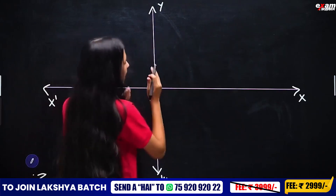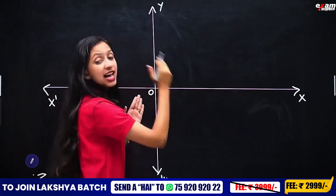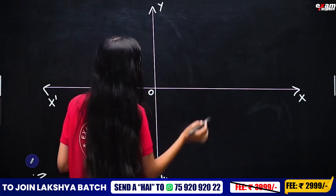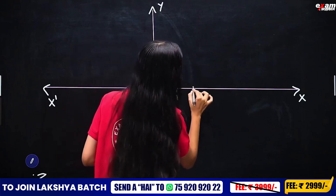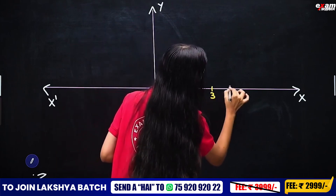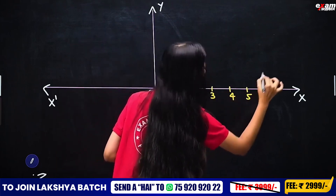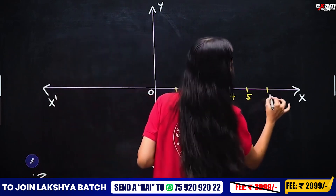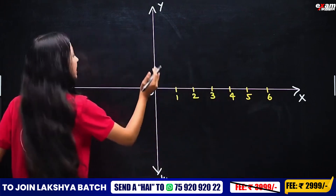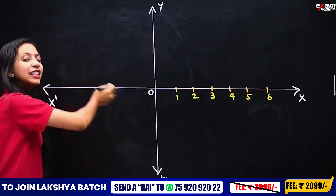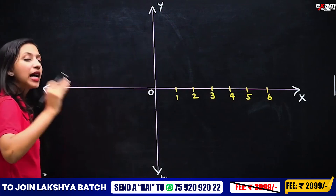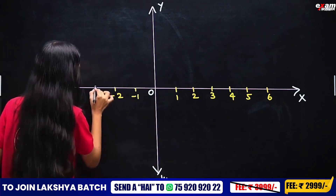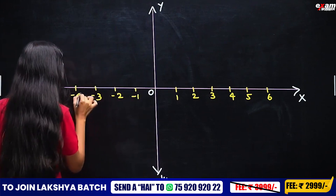Now we'll mark the right side with positive values: 1, 2, 3, 4, 5. We have to mark the scale in equal distance. We mark up to 6. Left of 0 we mark the minus values: minus 1, minus 2, minus 3, minus 4.